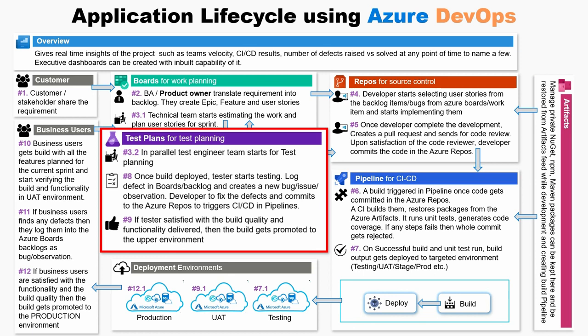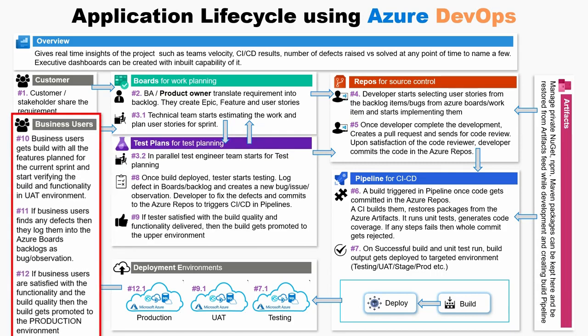Once the testing team provides sign-off, the build gets promoted to the UAT environment for business users to test the functionality. Business users start verifying all the functionality planned for the current build and sprint in the UAT environment. If they find any defects, they log them in Azure Boards. If the business users are satisfied with all the functionality and build quality, the build gets promoted to the production environment for end users. If an issue gets reported in the production environment, those defects get logged in Azure Boards for fixes.